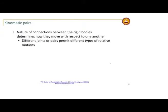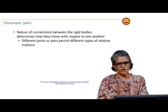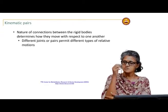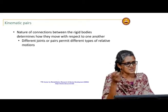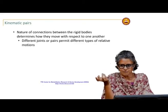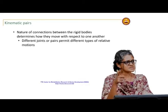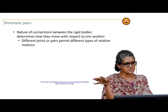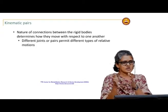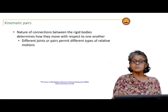A link is basically just a rigid body — and a rigid body is an idealization, but a fairly reasonable assumption. If the deformations in the rigid body are much smaller than the motion it undergoes, we can treat it as rigid. In reality there is no such thing as a rigid body — every body deforms under the action of forces — but we make the assumption that in an ideal case, the distance between any two points does not change.